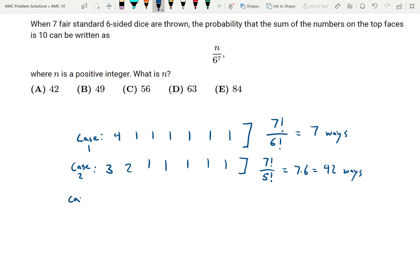And the last case is going to be if three of my rolls are 2s and then the rest are 1s. This can happen 7 factorial divided by 3 factorial times 4 factorial, because there are 3 2s and then 4 1s. This is going to be 7 times 6 times 5 over 3 factorial, 7 times 5, got 35 ways here.